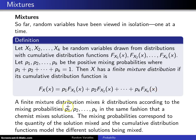A finite mixture distribution mixes k distributions according to the mixing probabilities p1, p2, up to pk, in pretty much the same fashion that a chemist mixes solutions. The mixing probabilities correspond to how much of the solution is mixed in, and the cumulative distribution functions correspond to the different solutions that are being mixed together.